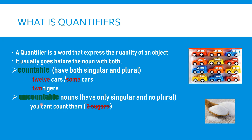Whereas uncountable nouns — it is only measured and it cannot be counted. For example, oil, water, milk — these are called uncountable nouns.